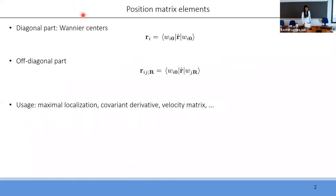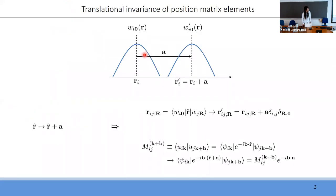The quantity I'll focus on today is the position matrix elements, which are the matrix elements of the position operator in the basis of localized Wannier functions. The diagonal part gives the Wannier centers and the off-diagonal part gives the optical matrix elements. These matrix elements are used in various places in the Wannier function methodology. The property I will discuss is translational invariance.